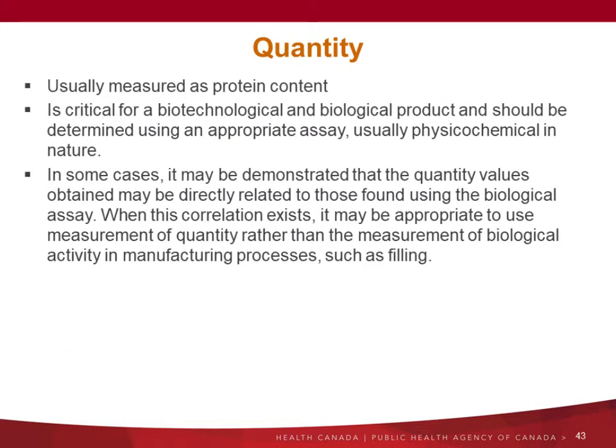The last aspect of characterization is quantity — normally measuring protein content, which is really critical for biotech products. In some cases, it may be demonstrated that quantity values obtained may be directly related to those found using the biological assay. If you can establish that correlation between those two parameters, it may be appropriate to use measurement of quantity rather than biological activity in the manufacturing process — such as filling by mass — because the assay is less variable.